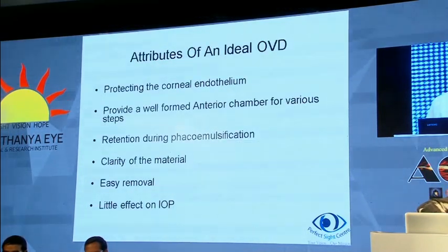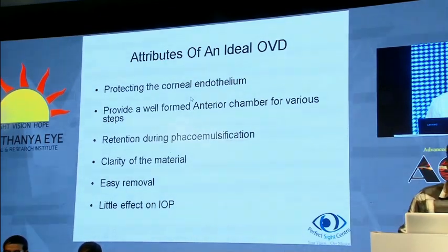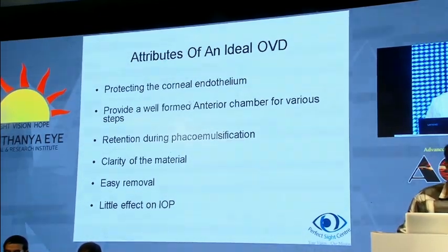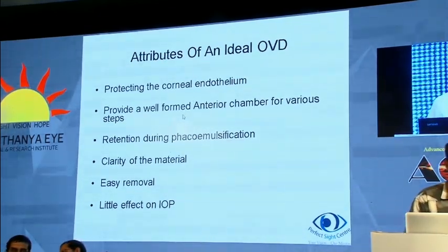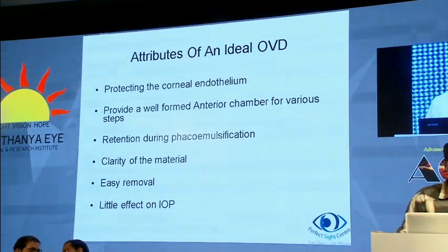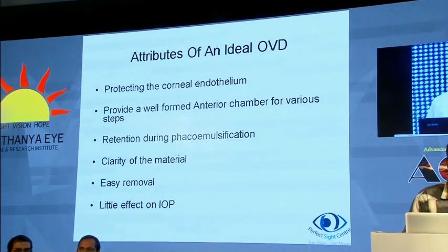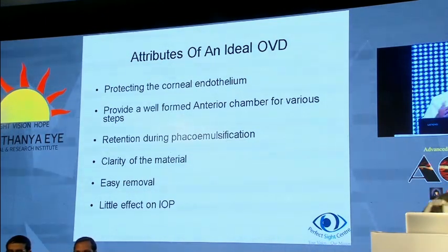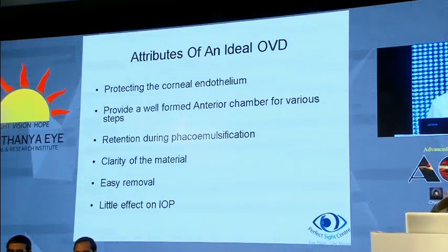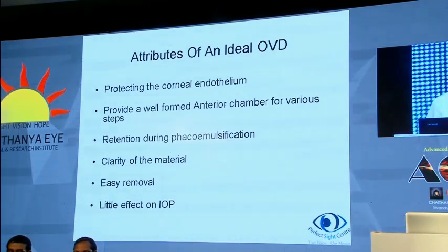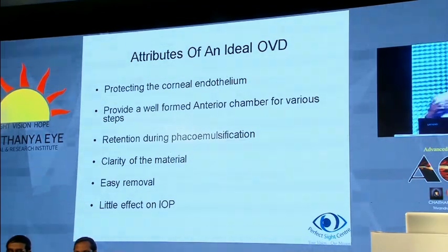What is an ideal OVD? It should protect the corneal endothelium, which is of primary importance. It should provide a well-formed anterior chamber for various steps and also protect the posterior capsule during the procedure. It should be retained during phacoemulsification. The material should be reasonably clear and easily removable — removability is a major concern as it takes up quite a bit of time.